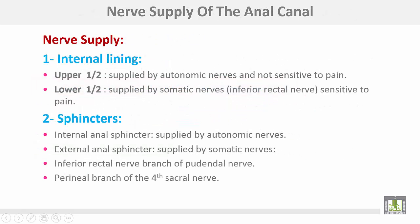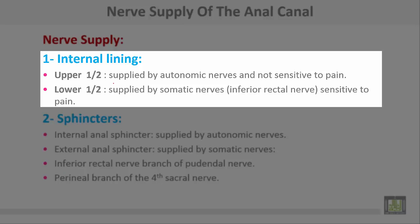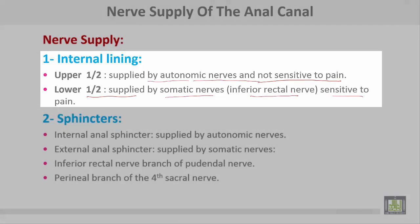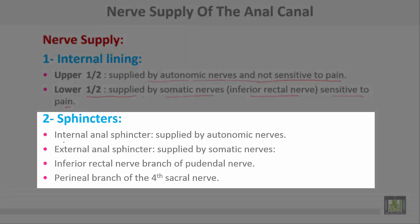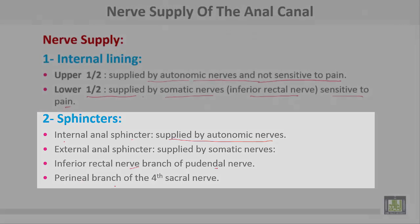The nerve supply for the anal canal: the upper half is supplied by autonomic nerves, which is not sensitive to pain, while the lower half is supplied by somatic nerves from the inferior rectal nerve, which is sensitive to pain. So if there is an anal fissure in the upper half it is painless, while an anal fissure in the lower half is painful. The internal anal sphincter is supplied by autonomic nerves, while the external anal sphincter is supplied by somatic nerves from the inferior rectal branch of the pudendal nerve and the perineal branch of the fourth sacral nerve.